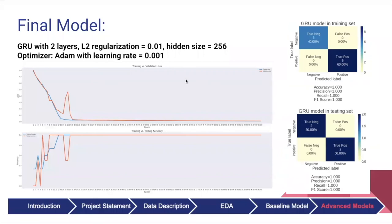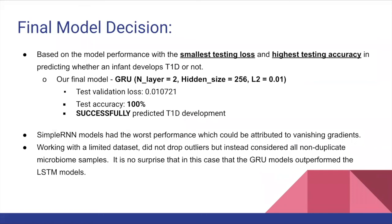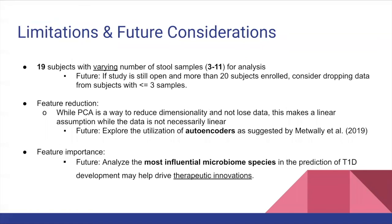Our final model is the two-layer GRU model with L2 regularization of 0.01 and hidden size of 256. This had the smallest test validation loss of 0.011 and highest test accuracy of 100%. Overall, our final model was successful in predicting whether an infant developed T1D or not. The simple RNNs had the worst performance, perhaps due to vanishing gradients. LSTMs performed similarly to GRUs, but with a small dataset and considering computational resources, GRUs are preferred. In the future, a larger dataset with more microbiome samples may benefit from the power of LSTMs, and we may drop outlying subjects with 3 or fewer samples. We would also consider dimensionality reduction with autoencoders and contrasting results with a regularized LSTM. Analyzing the most influential microbiome species in the prediction of T1D development may influence new therapeutic innovations — the ultimate goal.